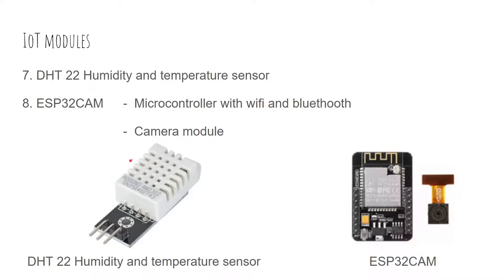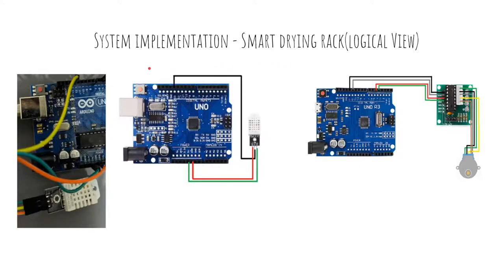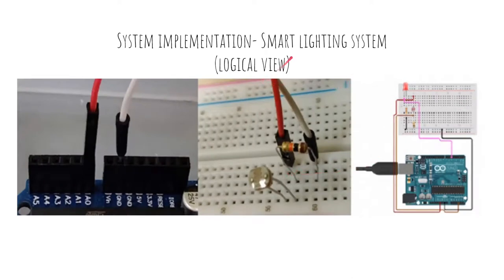For the system implementation logical views — starting with the smart drying rack — the DHT22 heat and humidity sensor gets readings for the heat and humidity of the clothes so the user can get a rough idea of weather conditions. The humidity reading provides an idea of the clothes' drying condition. A motor is also connected to control the drying rack.